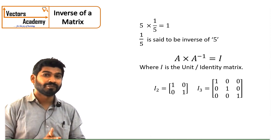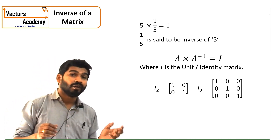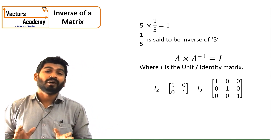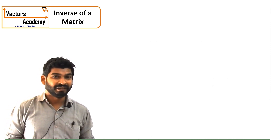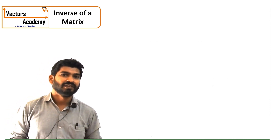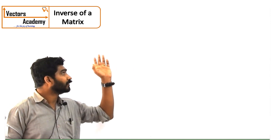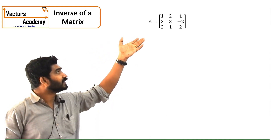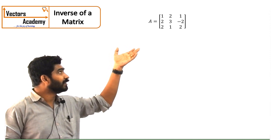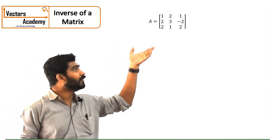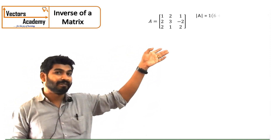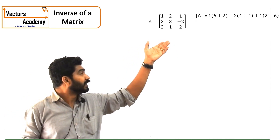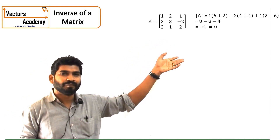Now let us see how to find out an inverse of a matrix. First of all you should know how to solve determinants — a 2 by 2 determinant and a 3 by 3 determinant. Once you know this, you can proceed with finding the inverse of a matrix. Now if I consider this matrix A, matrix A is a 3 by 3 matrix and we have to find its inverse. The first thing you have to find is the determinant of the given matrix. The determinant comes out to be minus 4.